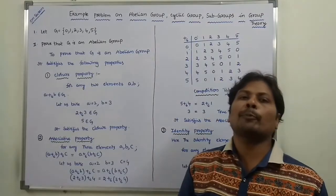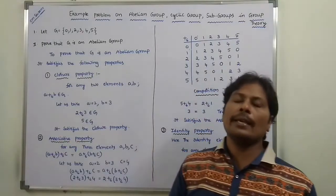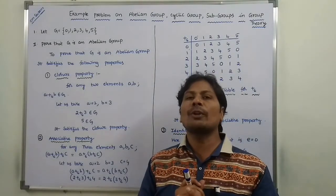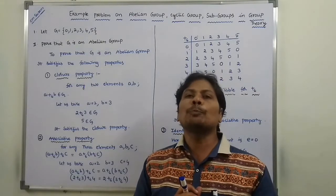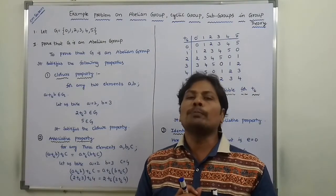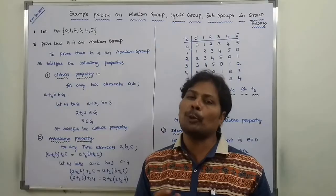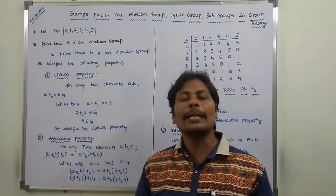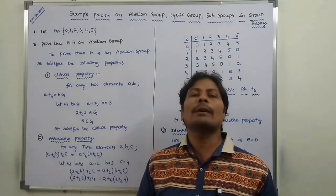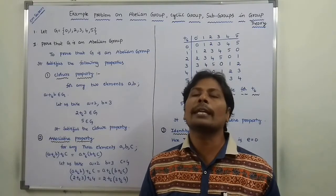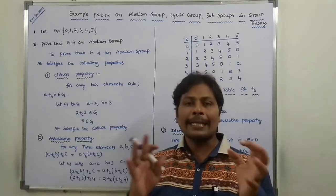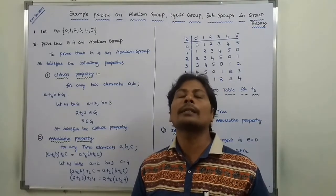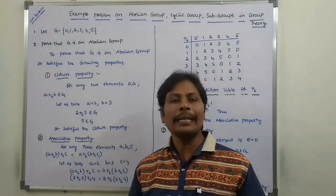The second sub-problem is: prove that G is an abelian group. To prove that addition modulo 6 for group G is an abelian group, it must satisfy 5 properties: closure property, associative property, identity property, inverse property, and commutative property. By satisfying these 5 properties, addition modulo 6 under group G is an abelian group.